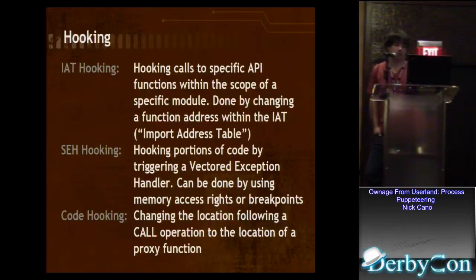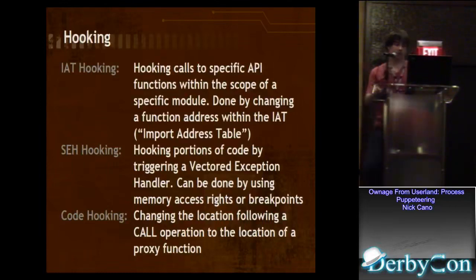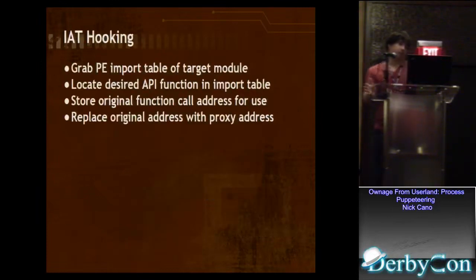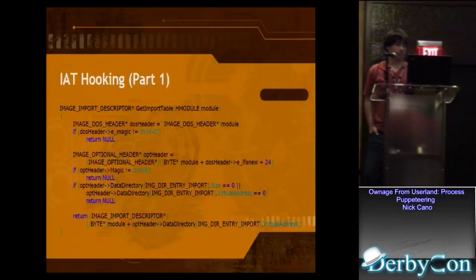SEH hooking is hooking portions of code by triggering a vectored exception handler. You can do that by putting an int3 breakpoint on that piece of memory, interrupt 2D, or maybe set the memory to no access — whatever triggers an exception handler when that piece of code is hit. Code hooking is the simplest of the three: just change the location following the call operation to your own location, causing the process to call your own function. For IAT hooking, we grab the PE import table of the target module, locate the desired API function, store that original function call in case we want to call it, and replace the original address with our proxy address.